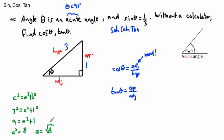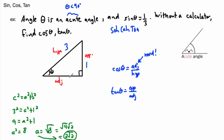Some people leave it as √8, but we can simplify. We rewrite √8 as √4 × √2, because 4 × 2 = 8. Since √4 is a perfect square equal to 2, this simplifies to 2√2. So the adjacent side is 2√2, which is the exact simplified form.